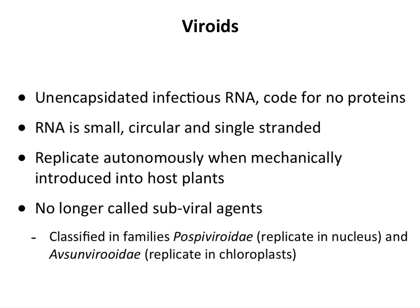Viroids are just RNA molecules — unencapsidated RNA that don't code for any protein. It's just a piece of RNA that has survived for many years without being able to encode protein. The RNA is a small, single-stranded circle. When they get into plants — usually by mechanical damage, farm equipment, or contamination at the seedling level — they replicate and produce more of themselves. They are now classified into two families, Pospiviroidae and Avsunviroidae, based on whether they replicate in the nucleus or the chloroplast.